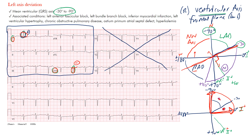Looking at lead II here: drawing a baseline, there's some positive but most of it is negative — mostly negative — therefore going away from lead II. So the arrow goes in this direction. The axis in this example was negative 40 degrees, which puts us here — left axis deviation in an adult patient.